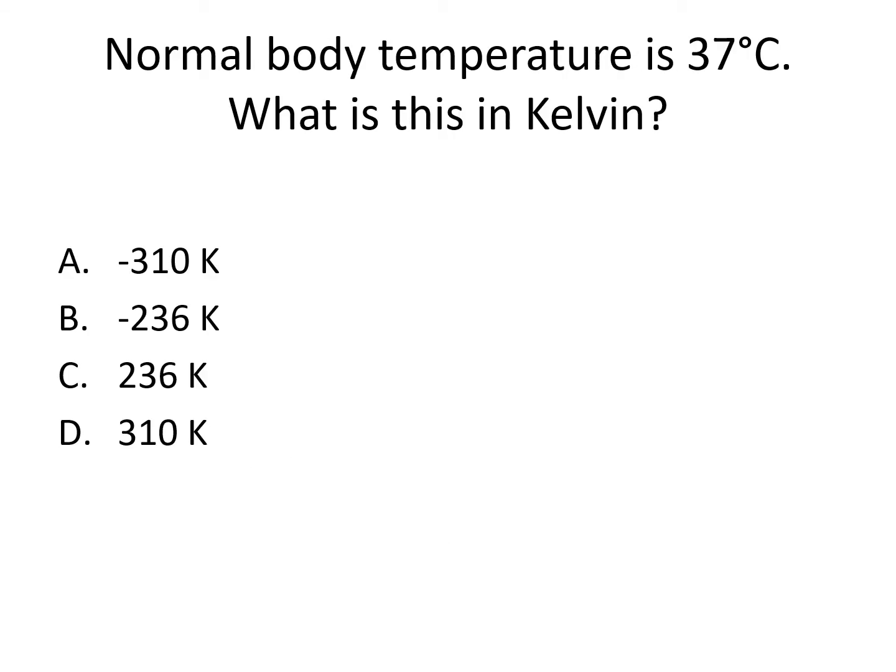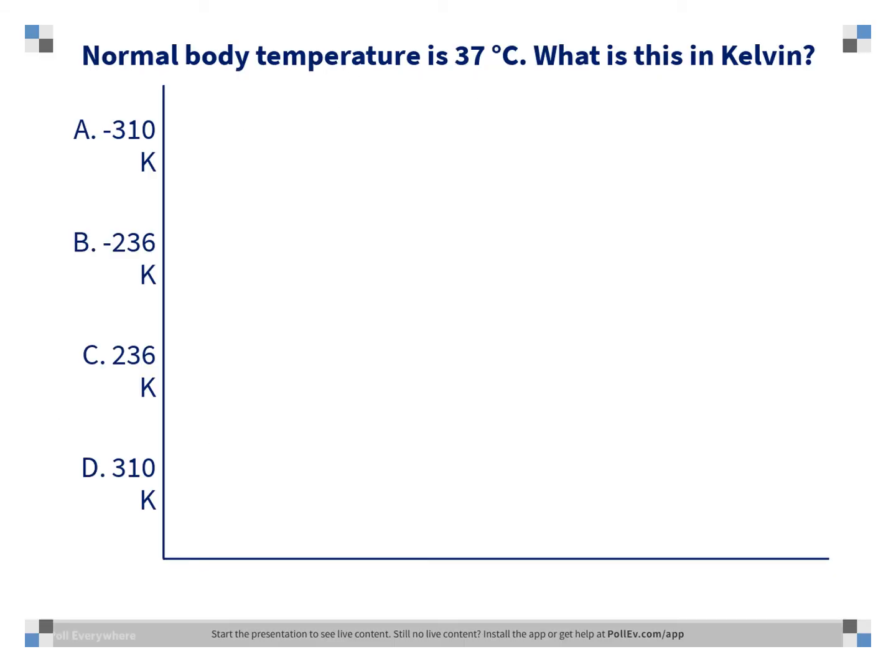Normal body temperature is 37 degrees Celsius. What is this in Kelvin? Is it A, negative 310 Kelvin; B, negative 236 Kelvin; C, 236 Kelvin; or D, 310 Kelvin? The correct answer is D, 310 Kelvin. To go from Celsius to Kelvin, we add 273.15. The Kelvin temperature will always be larger than the corresponding Celsius temperature.